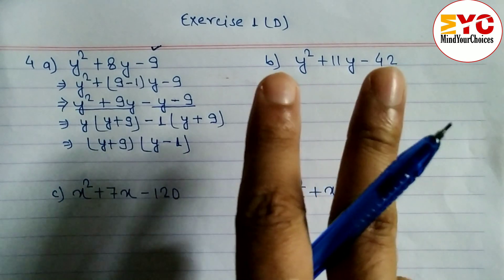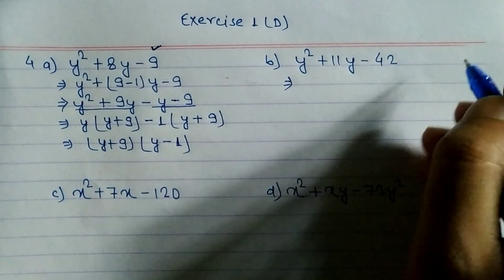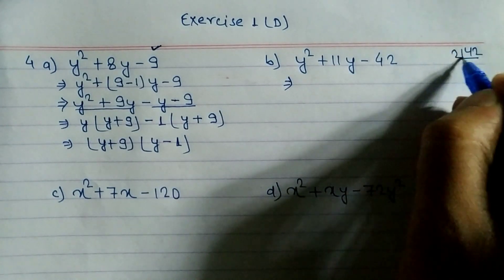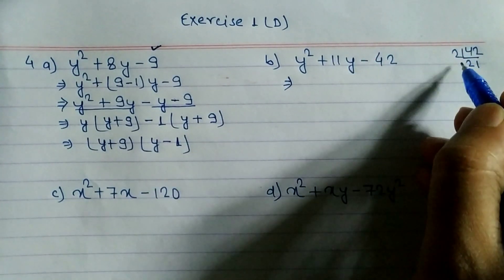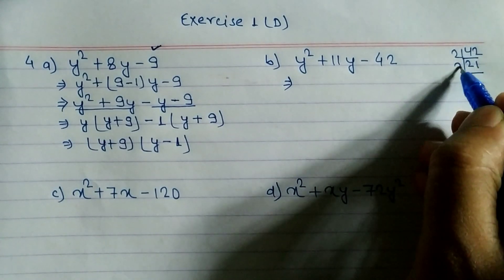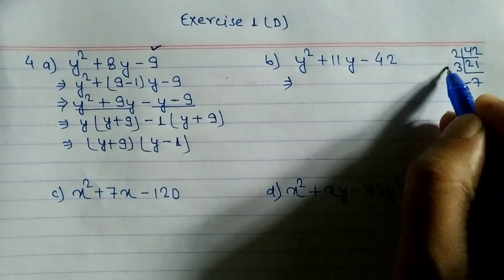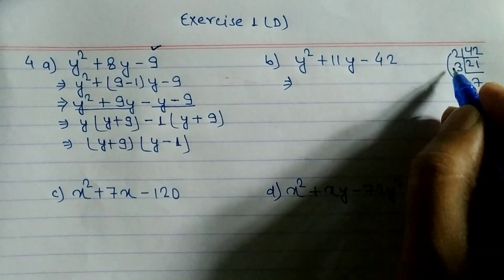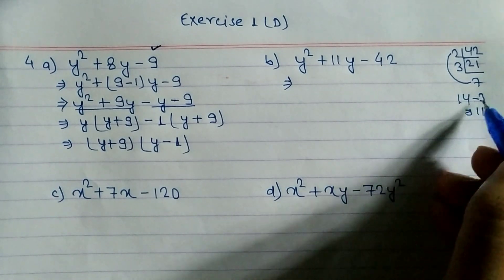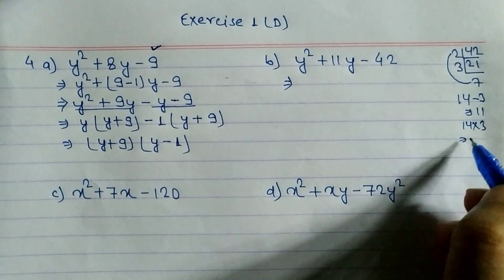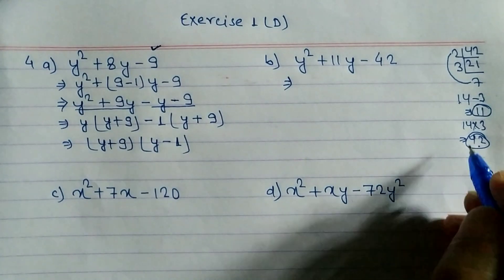For problem B, we need two numbers whose multiplication is 42 and subtraction is 11. Dividing 42: 2 × 21, giving 21 and 2 — subtract to get 19, not 11. Try 3 × 7 = 21, giving factors 3, 7, 14. We see 14 × 3 = 42 and 14 - 3 = 11. So the factors are 14 and 3.